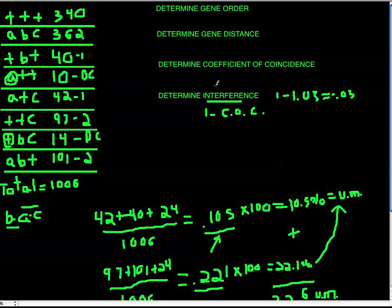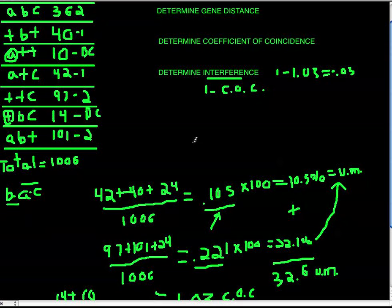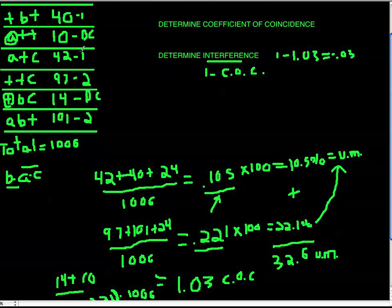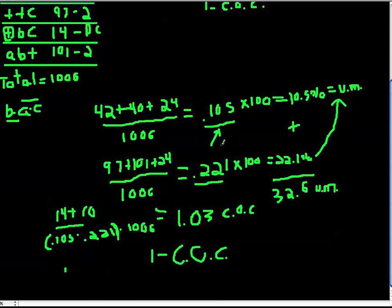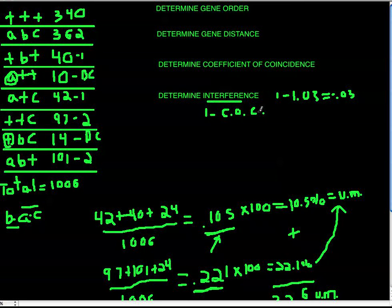That's why you determine gene order first, then gene distance, then coefficient of coincidence, and finally interference. To recap the formulas: distance = (single crossovers + double crossovers) / total, times 100. COC = observed double crossovers / (distance 1 × distance 2 × total), using the decimal form before multiplying by 100. Interference = 1 minus COC. That's all there is to three-point crosses — just pay attention to your numbers, get your order right, and you'll be fine.